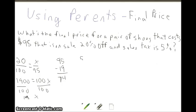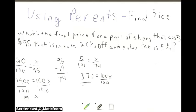We set up the proportion: 5 over 100 equals x over 74, since $74 is the total cost of the shoes. We do 5 times 74, which is 370, then divide by 100 to get a sales tax amount of $3.70.